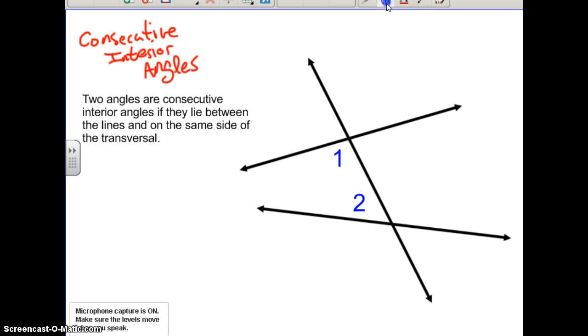Consecutive interior angles are sometimes said to make a U or a C depending on how you look at it. But if you look at that, it's sort of a weird letter U. So you may want to write down C or U next to your definition so you know to look for that when you're looking for consecutive interior angles.